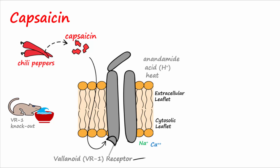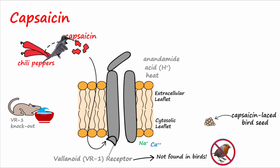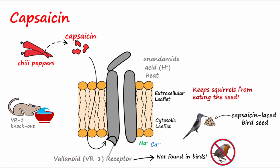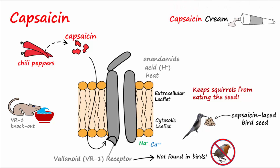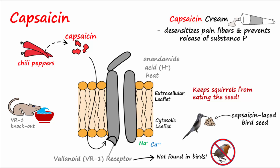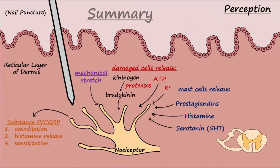VR1 receptors have not been found in birds; this finding led to the idea of producing capsaicin-laced bird seed to keep squirrels from eating the seed. It was also found that application of capsaicin desensitizes pain fibers and prevents substance P from being released from peripheral and central nerves. For this reason, a capsaicin cream has been developed and is used to treat pain associated with shingles, arthritis, mastectomy, and trigeminal neuralgia.